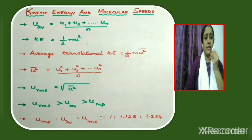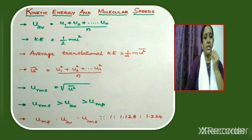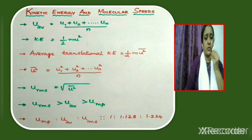Kinetic energy and molecular speeds. In a gas, molecules are in a state of random motion and continuously moving, colliding with each other and with the walls of the container. These collisions change the speed of the molecules, so we use the term average speed, u_avg = (u1 + u2 + ... + un) / n, that is the sum of all molecular speeds divided by the total number of molecules.